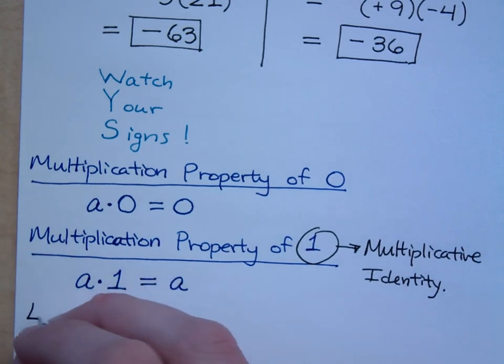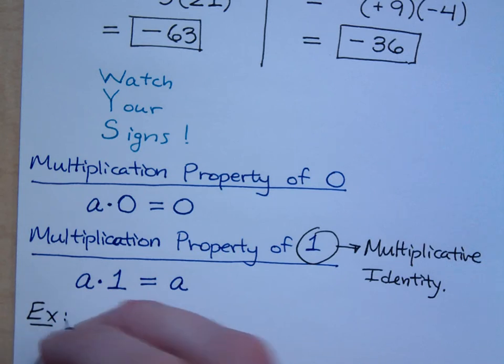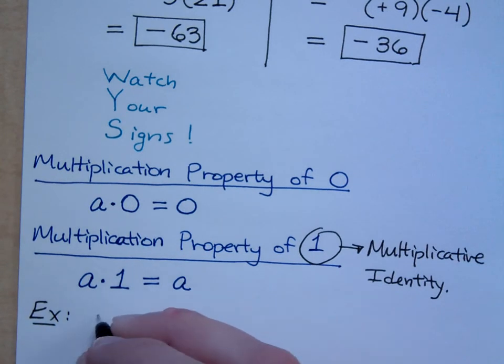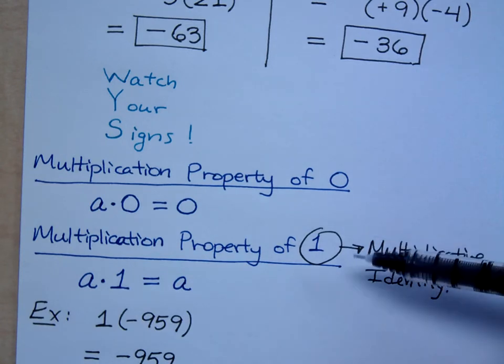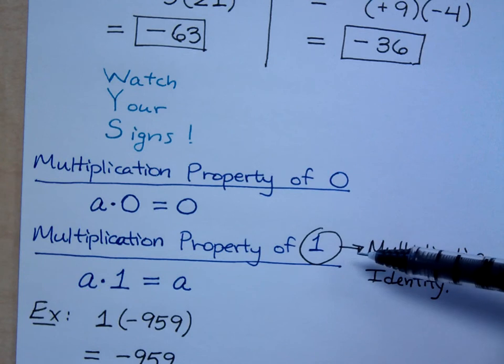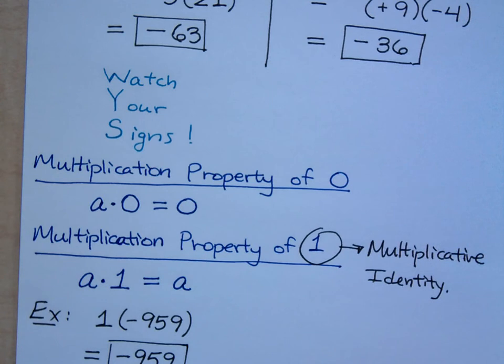So, let's look at some examples of this in action. You may expect me to give you something like this. If I have one times negative 959, what's my answer? It's just negative 959, right? Why is that? Well, according to the multiplication property of one, if I multiply something times one, I get the same number I started with, right?